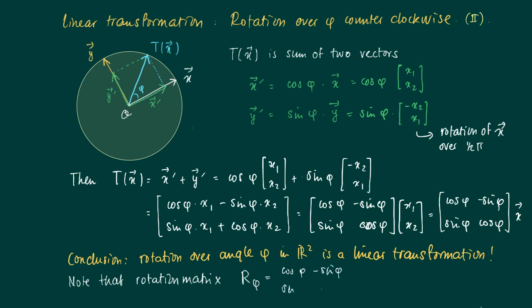Noting the structure of the rotation matrix: on the diagonal we have the same elements, cosine of φ, and the off-diagonal elements are sin(φ) and -sin(φ), of the form b and -b.